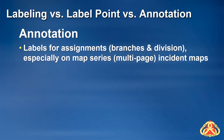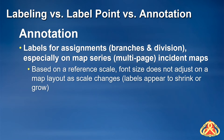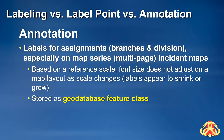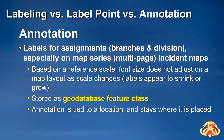Annotation has been typically used to label assignments like divisions and branches. It can be especially useful on complex, multi-page map series layouts where more than one assignment label may be necessary to clearly label an assignment area. Annotation is based on a reference scale, meaning the font size is tied to that reference scale and will not change when the map scale changes in a layout. Annotation is stored as a geodatabase feature class, and annotation features are tied to geospatial locations and will stay at the location they are placed until moved by the editor.